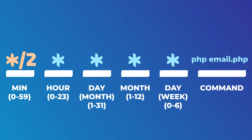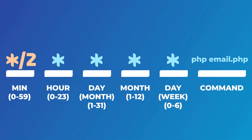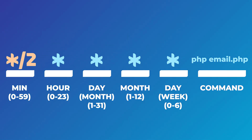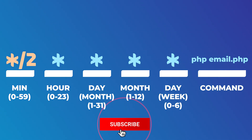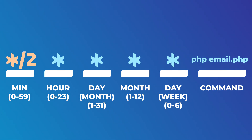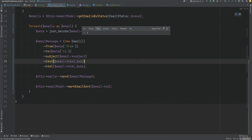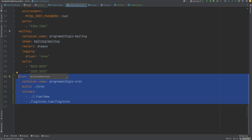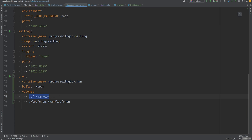Now that we have our cron expression, we need to add it to the crontab file. On a native Linux distribution you'd type 'crontab -e' and edit the file directly. But since we're working in a Docker container, we need to run cron within our container. We can either run cron in a separate container or within the same container as our app — we'll run it in a separate container. Let's open the docker-compose file where I've already created a cron container using a custom Dockerfile.